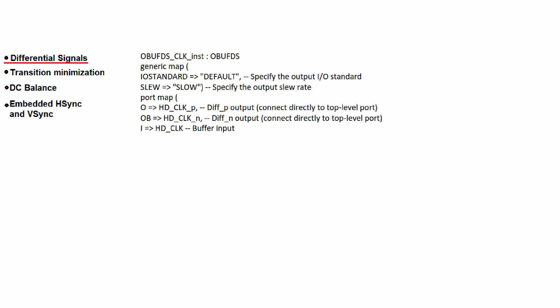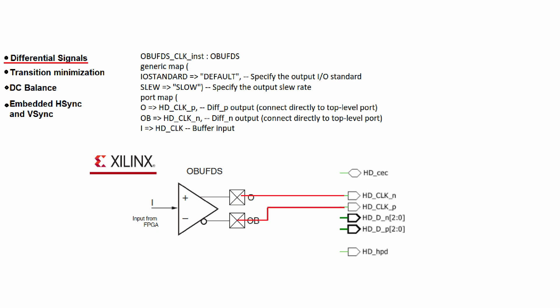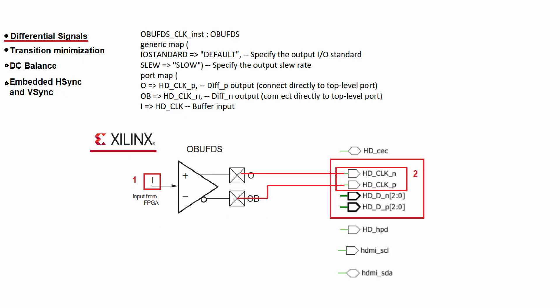The first algorithm is differential signals. This is the code for implementation of the differential signal technology using the OBUFDS output buffer primitive. This primitive helps us to output the differential signal from a single input signal. The output pads O and OB are connected to the differential output pins of HDMI. This allows us to manipulate two HDMI output differential pins using only one input signal from the FPGA, giving us 8 differential output pins controllable by just 4 input signals.